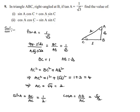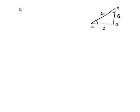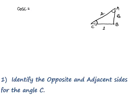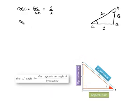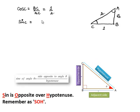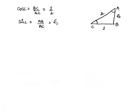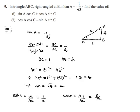Now considering angle C, cos C equals the adjacent side BC by hypotenuse AC, which equals 1 by 2. And sin C equals the opposite side AB by hypotenuse AC, which equals root 3 by 2. So we now have the values of sin A, cos A, sin C, and cos C.